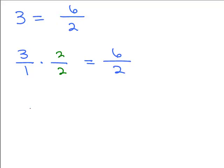Let's do another one — how about 5? What would go in the numerator if I wanted a 7 in the denominator? 7 times 5 is 35. Is 5 the same thing as 35 divided by 7? Yes.